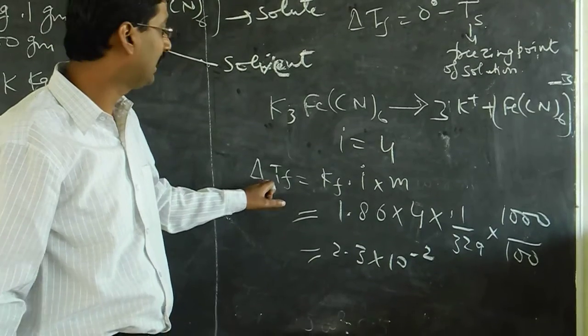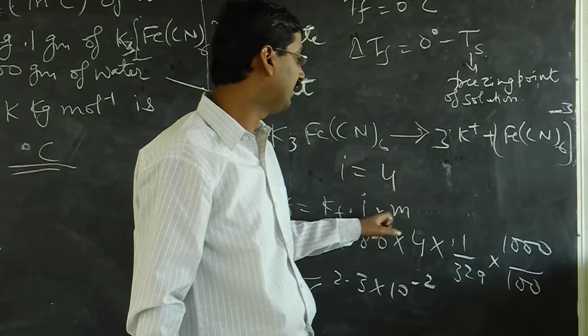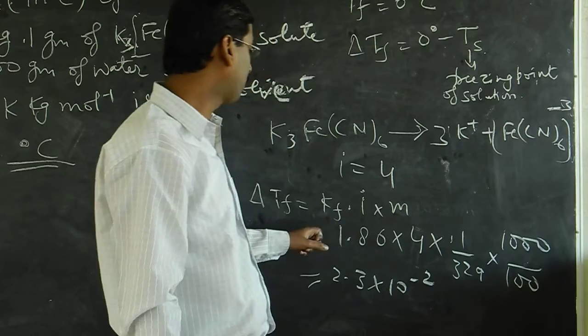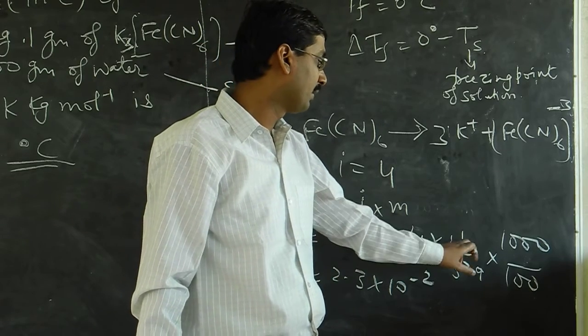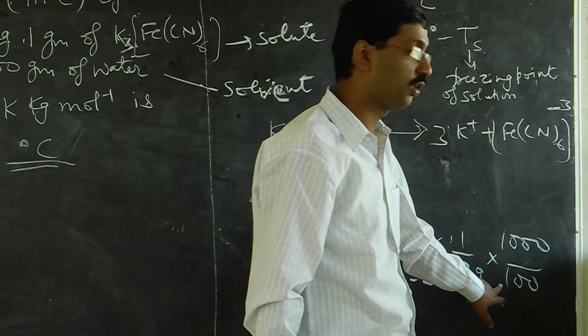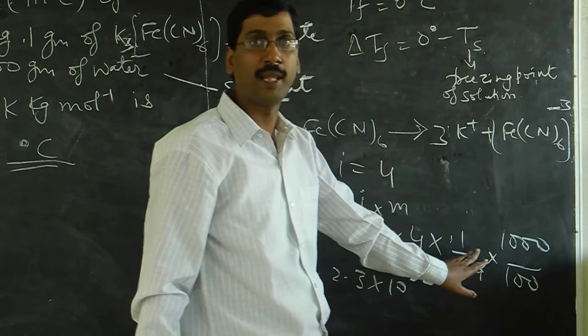And you know that delta Tf is Kf into i into m, so Kf value is 1.86, van't Hoff factor is 4, molality is 0.1 divided by 329, and 100 grams solvent is dissolved, so multiply by 1000 for molality.